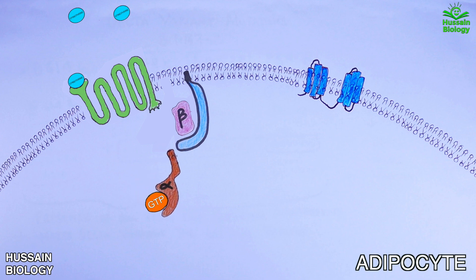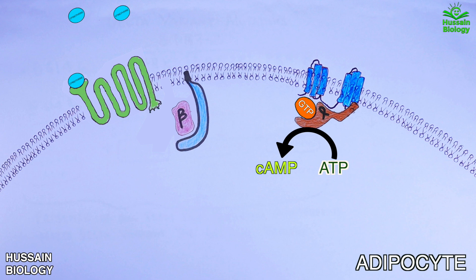Then from here it leaves and binds with the adenylyl cyclase. Upon binding, the adenylyl cyclase is activated which mediates the conversion of ATP to cyclic AMP or simply cAMP.